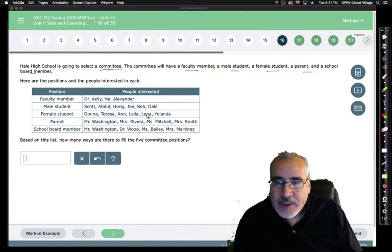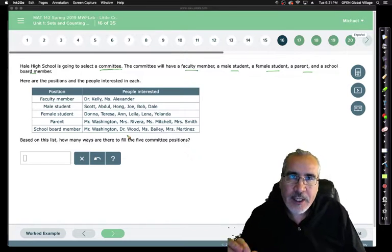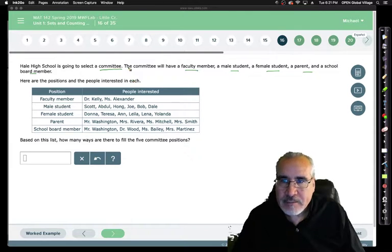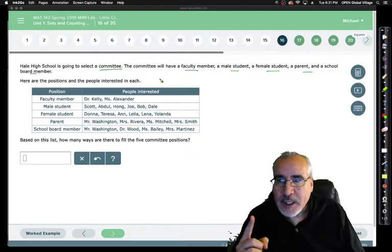Since we have distinct groups, when we're calculating the choices that are needed to be made, we take the number from each group and choose how many are being selected. We're going to select one from each group.